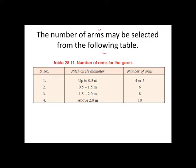From the table, pitch circle diameters range from 0.5 m to 2.0 m. Up to 0.5 m the number of arms will be 4 to 5, and depending upon the pitch circle diameter the number of arms changes to 6, 8, or 10. We may select from this table during design.